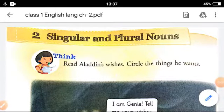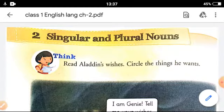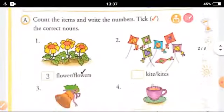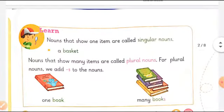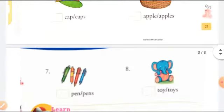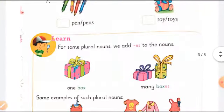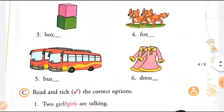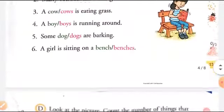Good morning children. Welcome to this session of English. Today we will be continuing with Chapter 2 on singular and plural nouns. We have seen that if an item is one it is called a singular noun, and if it is more than one it is called a plural noun. For plural we can add -s, and in some cases we can add -es. We did these exercises and it is time to move ahead.